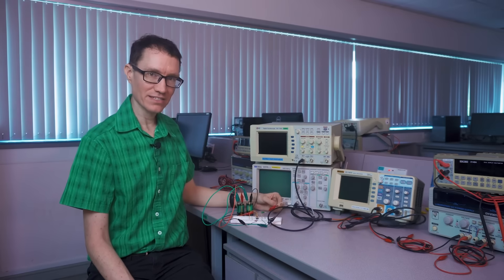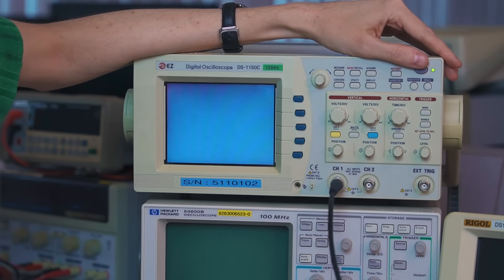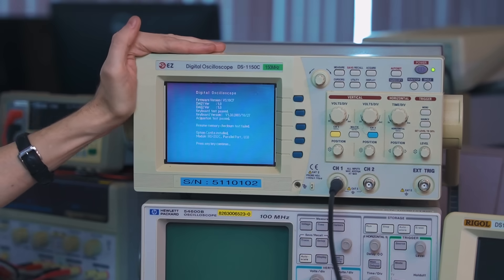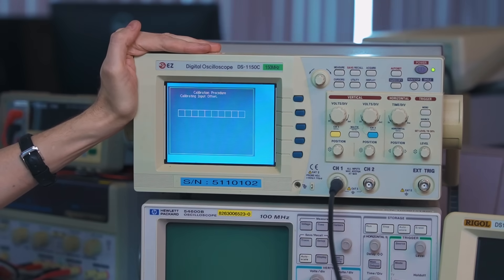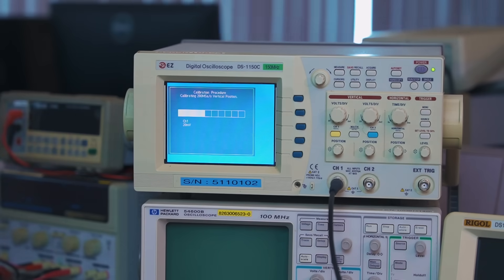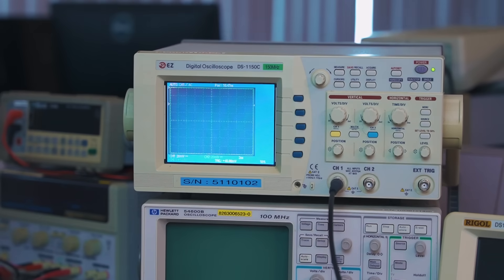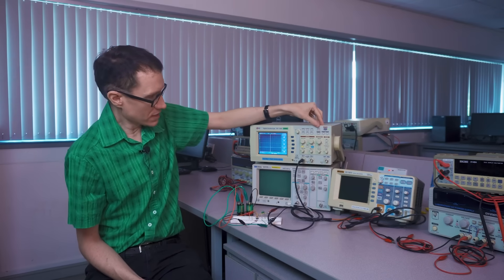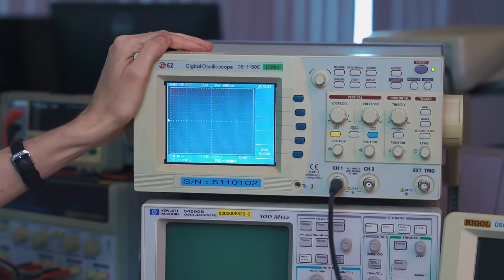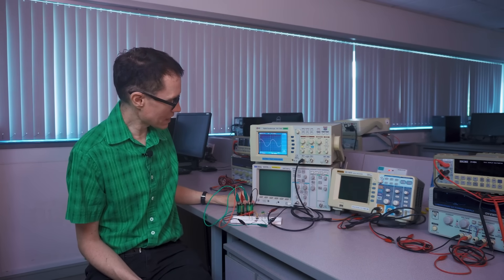I've gone ahead and connected the signal here to oscilloscope number two. Let's go ahead and turn it on. It looks like this older oscilloscope needs to run through a calibration procedure, so let's give it some time here to let it finish. The oscilloscope says press any key to continue, so I'll press some random key.